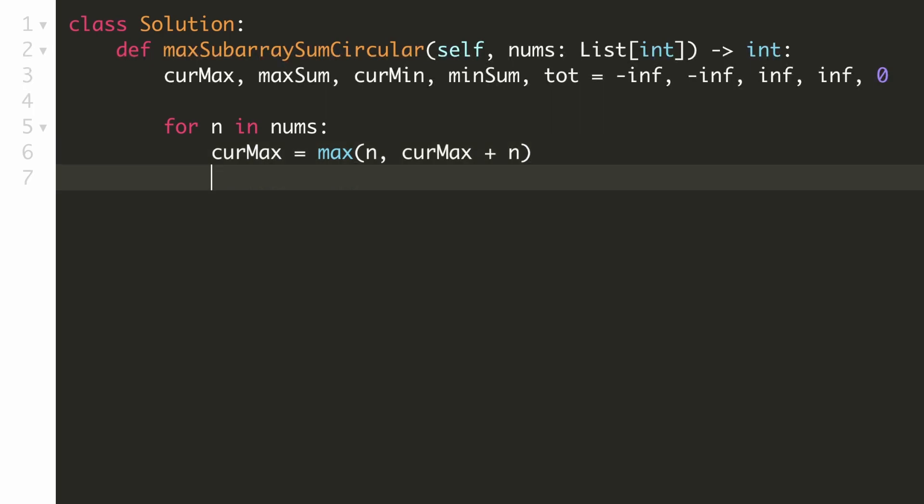And in our second scenario, we'll take the sum of our current maximum and the current number. Our current maximum will be the maximum of these two. Now we'll update the maximum sum of this array. We'll take the maximum of this with the current sum.